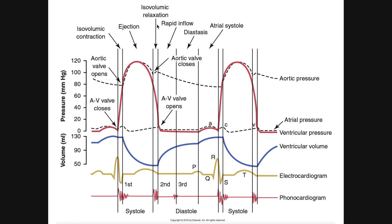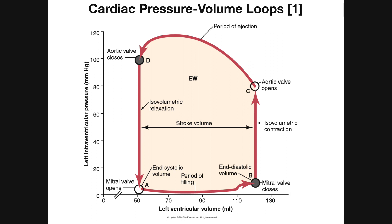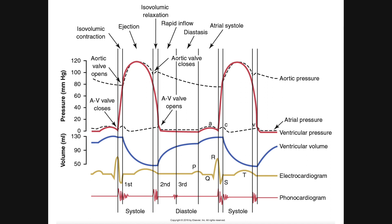This is an alternate way of looking at a cardiac pressure-volume loop. In a cardiac pressure-volume loop, which we looked at previously, we really just had one graph with pressure on the vertical axis and volume on the horizontal axis, both with respect to the left ventricle. Here we're still looking at the left ventricle, but the pressure part is actually now separated from the volume, and the horizontal axis is more of a time axis.